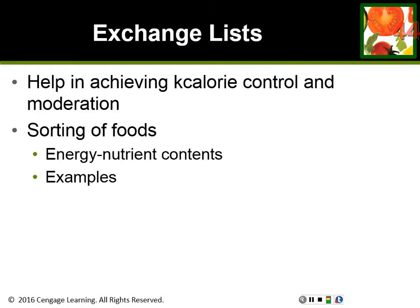Exchange lists are food groups and serving sizes that were developed to help people with diabetes plan meals. They aren't really used much anymore in meal planning for diabetics — they now use a different method called carbohydrate counting. But just know they were used to help plan meals for diabetic individuals.